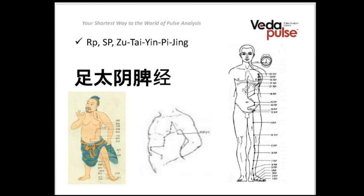Sometimes in literature this channel is mentioned as the Spleen and Pancreas channel. In Chinese tradition it is exactly the channel of Spleen, but according to European medicine, all functions of this system match the pancreas. That's why it is sometimes called the Spleen and Pancreas channel — both terms are equal for this system.